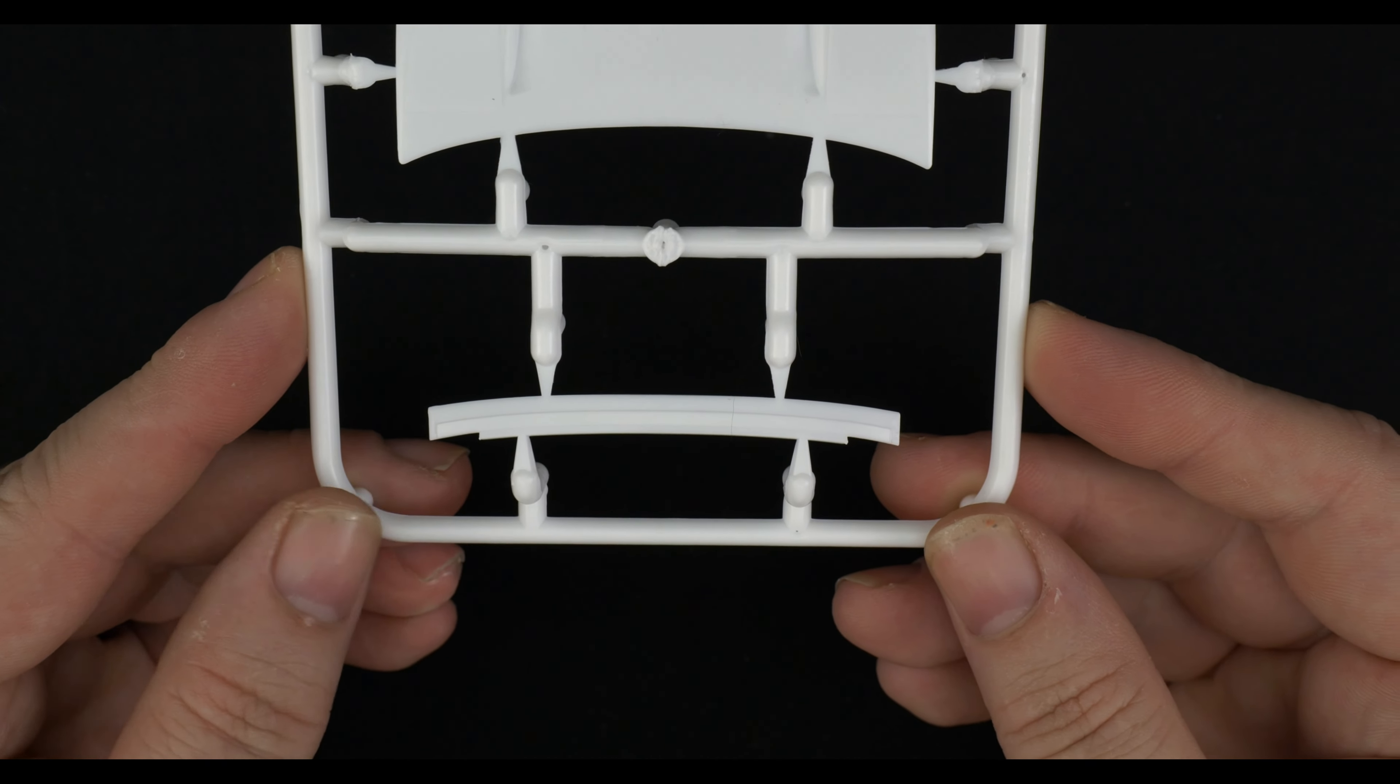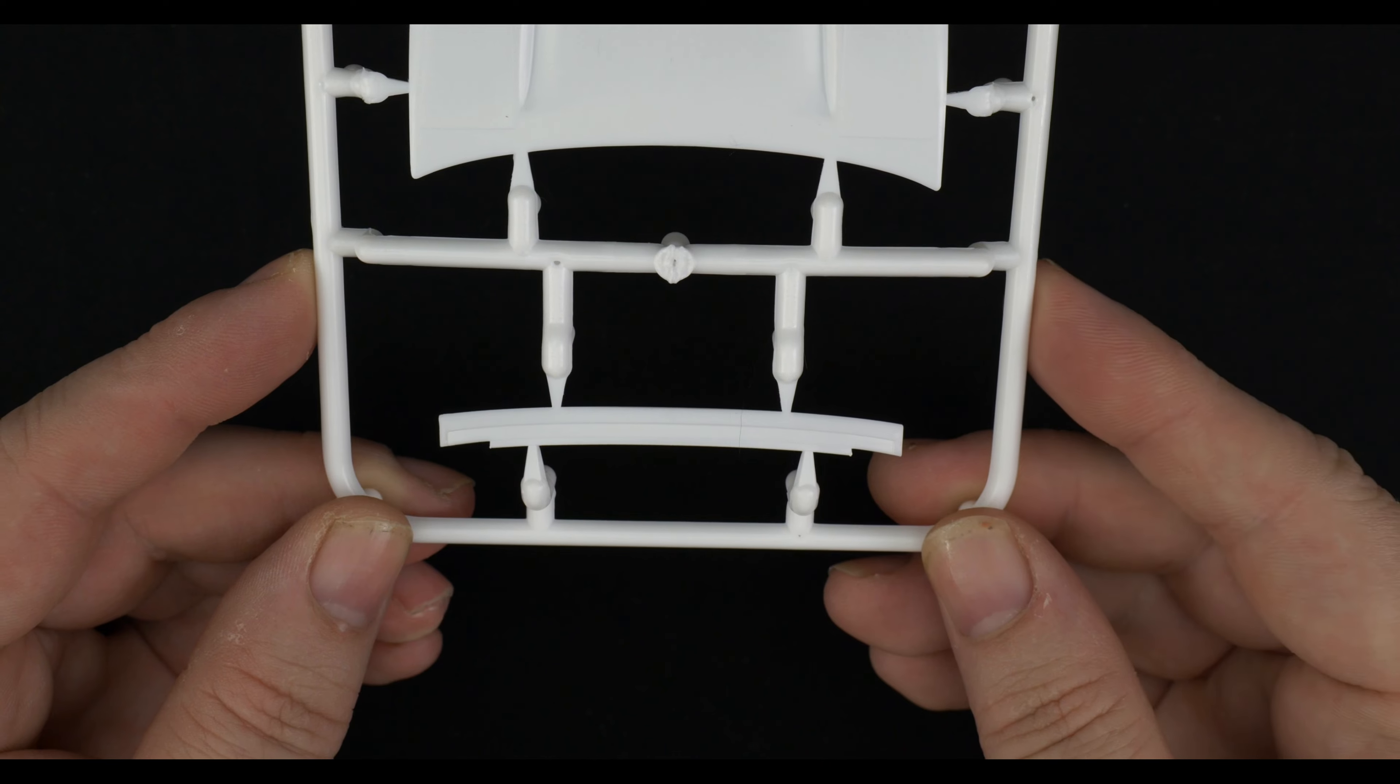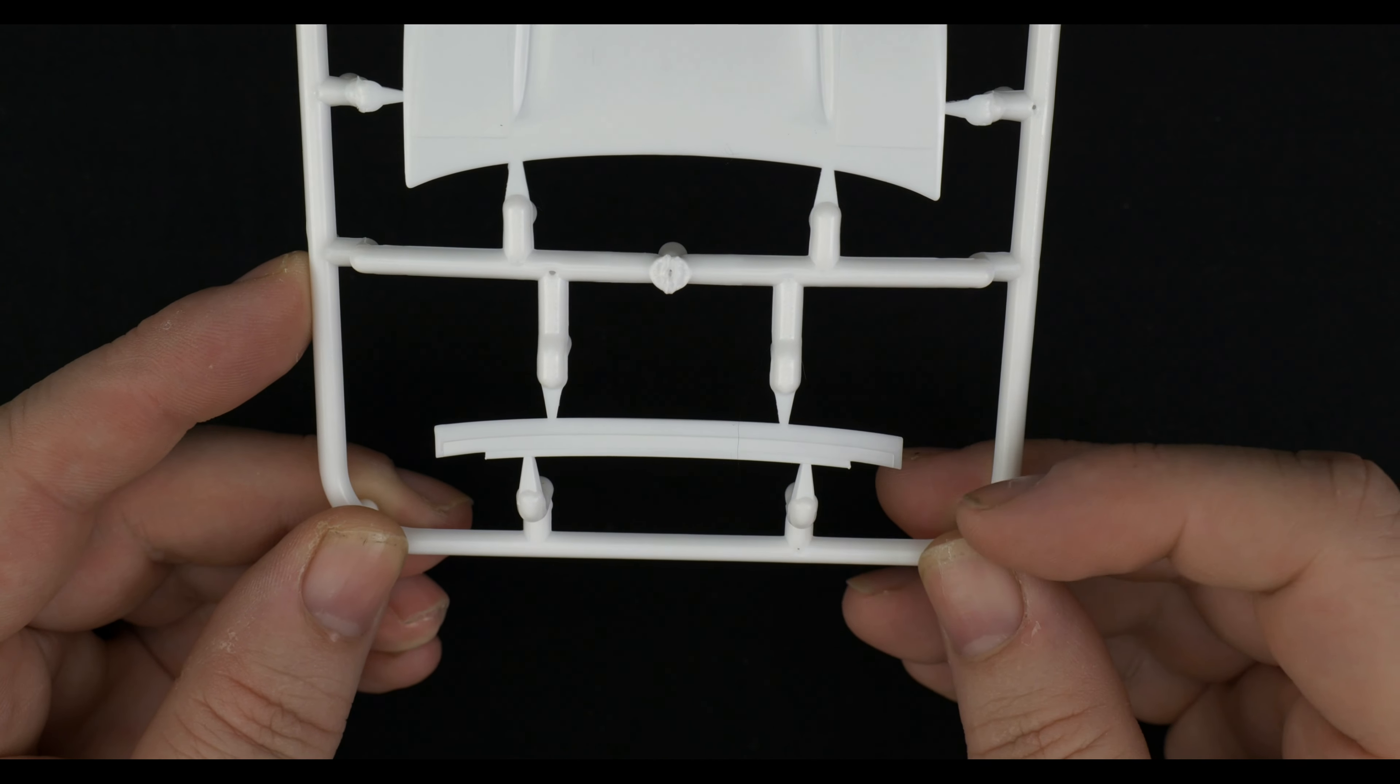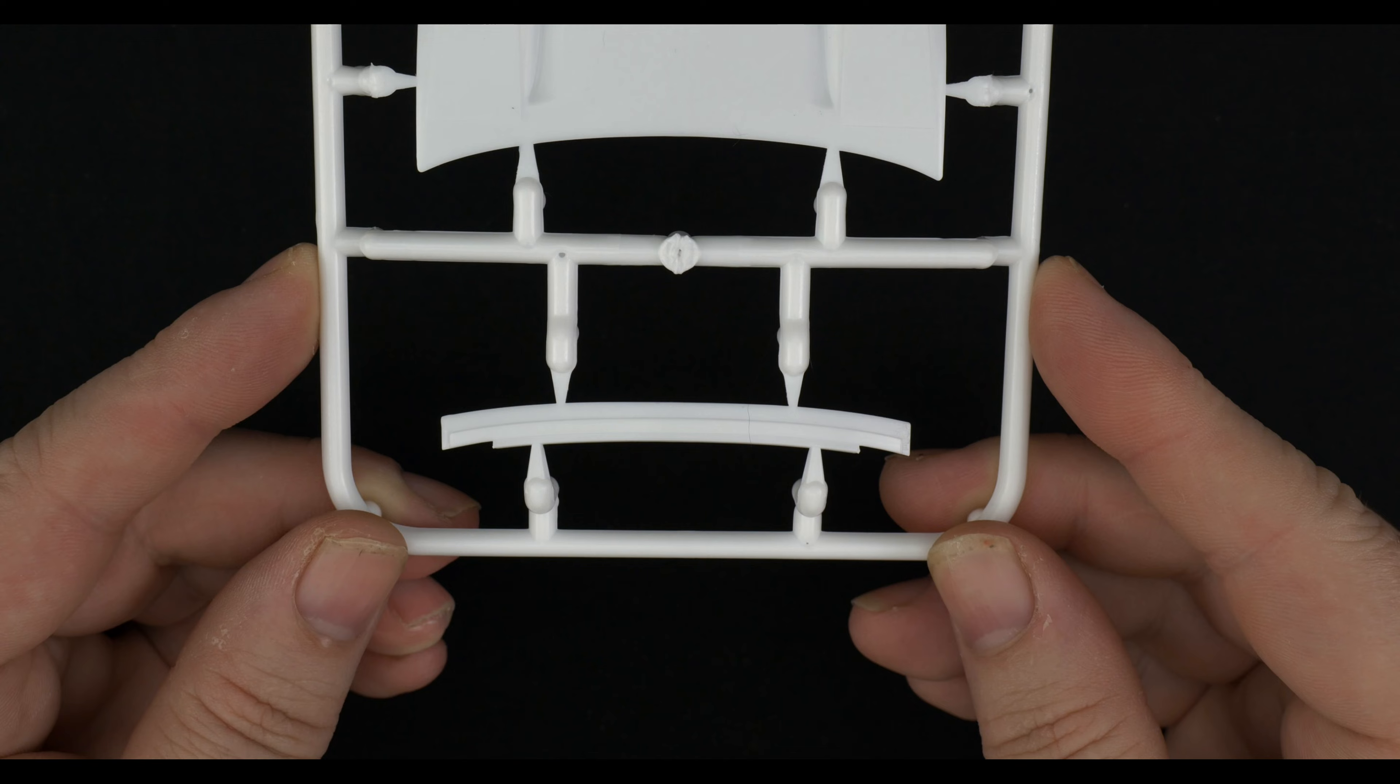And on to the low down spoiler, which is molded solid in the kit. But on the real car, the top piece is clear Lexan and the bottom piece is solid, usually painted black.